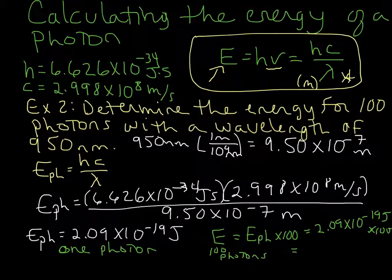And run the math, and we're going to end up with 2.09 times 10 to the negative 17 joules.